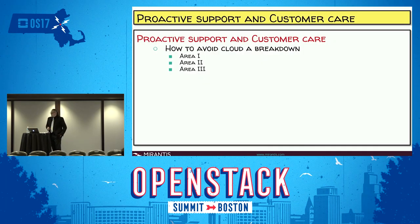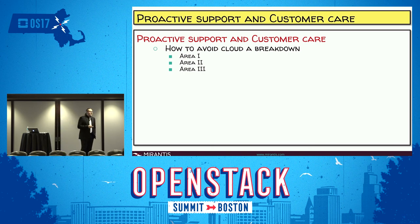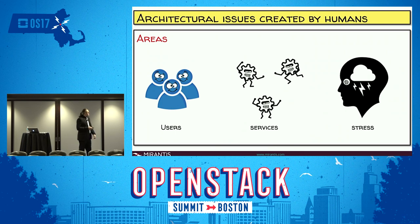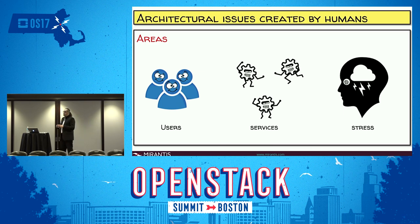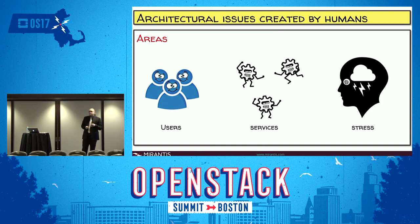So how do you avoid a cloud breakdown? I'd like to split this theme into three areas: users, services, and stress. These areas will help you avoid breakdown and prevent it. The key word here is 'prevent' — you can't create proactive support without any proactive steps, without preventing something.